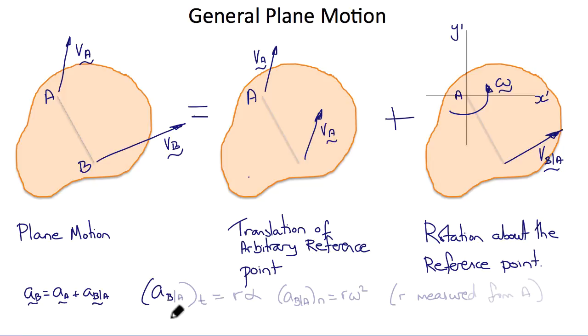And the tangent component of the relative acceleration is R alpha, and the normal component of the relative acceleration is R omega squared, where R here is measured from the new origin at A.